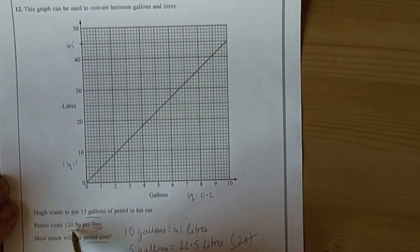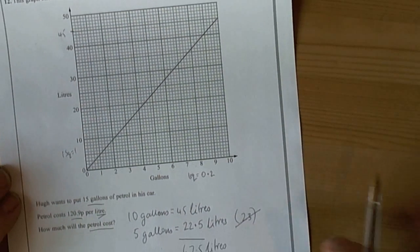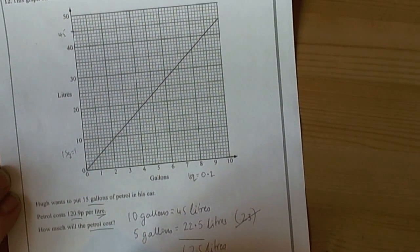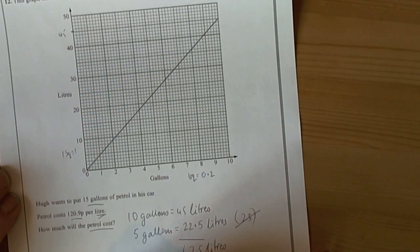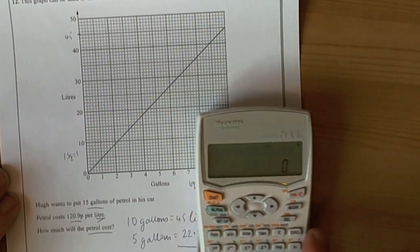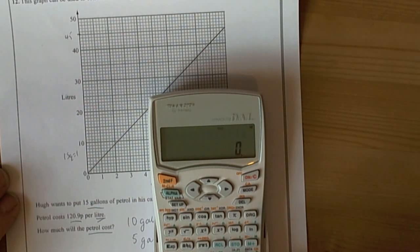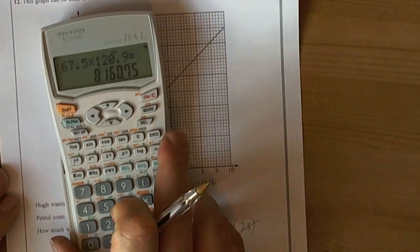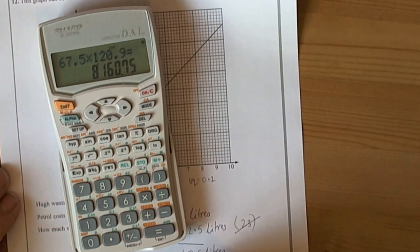Now they are telling us that the petrol costs 120.9 pence per litre. So if we have 67.5 litres, then we can do 67.5 times 120.9, and that is going to equal... So it is a calculator paper, so we are going to get the calculator, 67.5 times 120.9, and that gives us an answer of 8,160.75.